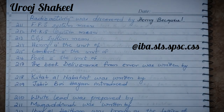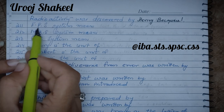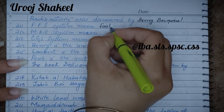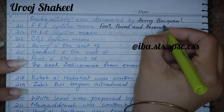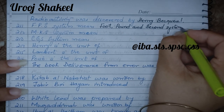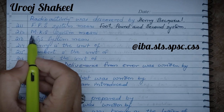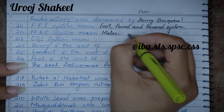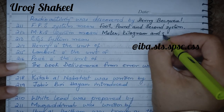The FPS system is a measurement system: F stands for Foot, P stands for Pound, and S stands for Second. The MKS system is also a measurement system: M stands for Meter, K stands for Kilogram, and S stands for Second.